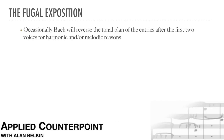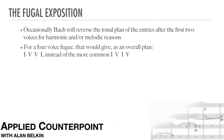Occasionally, Bach would reverse the tonal plan of the entries after the first two voices, for harmonic or melodic reasons. For a four-voice fugue, that would give an overall plan of tonic, dominant, dominant, tonic, instead of the more common tonic, dominant, tonic, dominant.